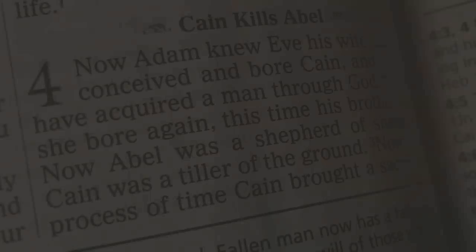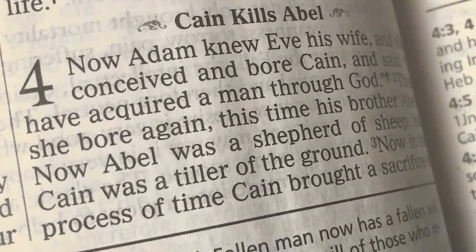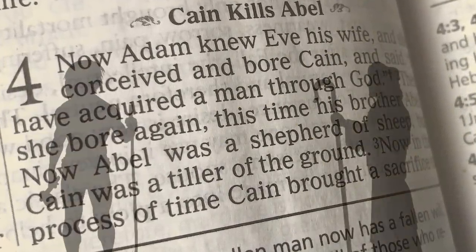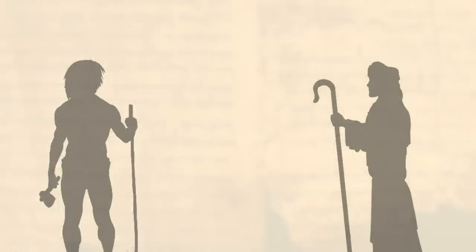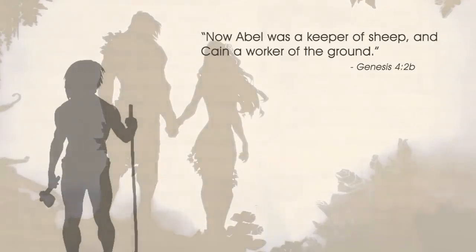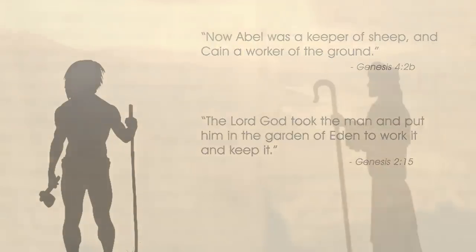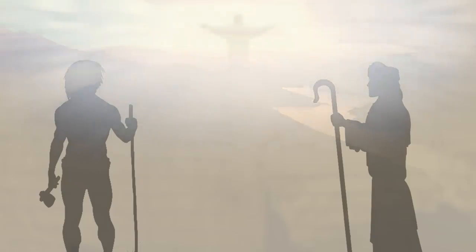Genesis 4 begins by noting that Eve has brought forth two sons, Cain the older and Abel the younger. Both can be seen bringing offerings before God, possibly in a priestly role like their parents. Cain works the ground, similar to what his father did in the garden, which might imply he is carrying on his father's role as a priest over the land, and it would explain why Cain and his brother are bringing offerings to God.